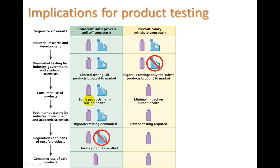Consumers use the product, and some products are later found to be harmful to humans. Then more rigorous post-market testing is conducted after it's already been introduced to the market. You might find it is an unsafe product — it's recalled, taken off the shelves, and no longer used. But there was a period of time when it was being used before it was shown to be really unsafe. This is the innocent until proven guilty approach.